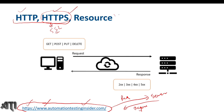Now if you talk about Resource: in API terms, whatever data is available on the server, we call it a resource. How we get the resource from the server, how we update the resource — we use this term frequently in API testing. Whatever data is present on the server, in the form of an image file, any data, JSON format, or any other format, we call it a resource.